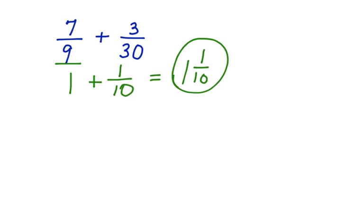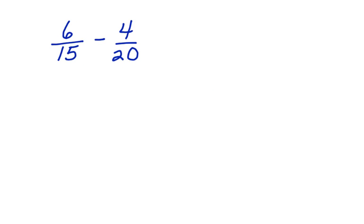We can do this with differences, too. Take a look at this one. 6 fifteenths minus 4 twentieths. First, let's look at each fraction and see if we can simplify it. 6 fifteenths can be simplified. It has the common factor of 3. 6 divided by 3 is 2. 15 divided by 3 is 5. Here I have 2 fifths.